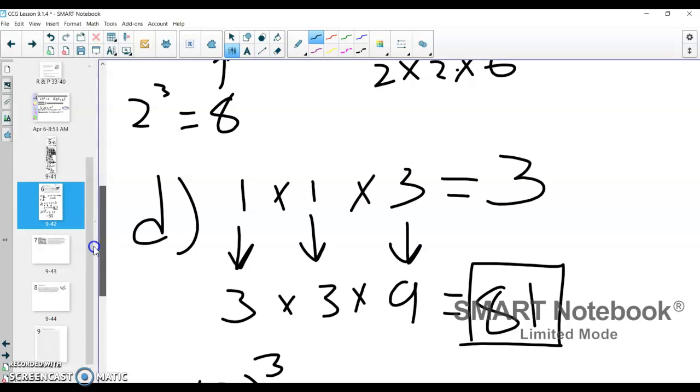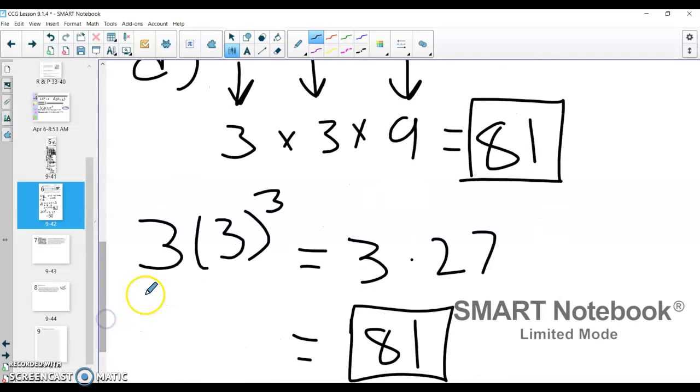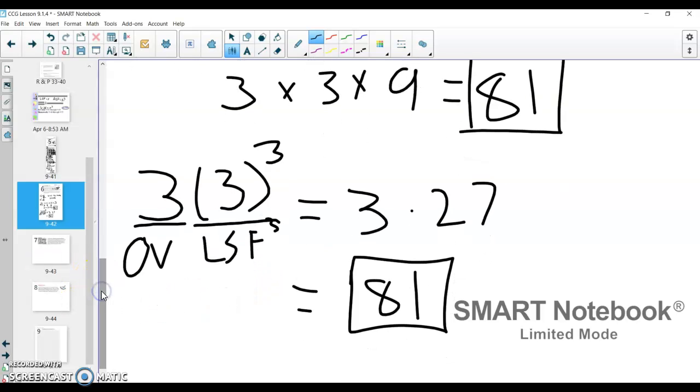So either way you want to think about it, those are the two, maybe you think about a different way, that's fine. But those are the two I think about either increase length times width times height, increase all of them by a scale factor of three, and then multiply them, or take your original volume, your original volume, and multiply it by your linear scale factor cubed. Either way, you'll get that correct new volume.